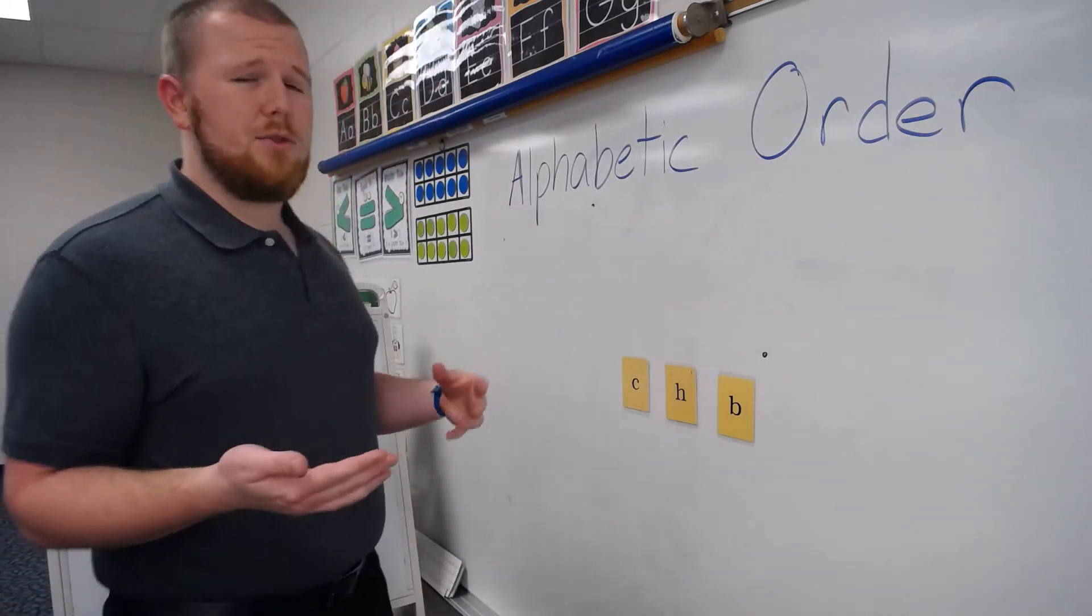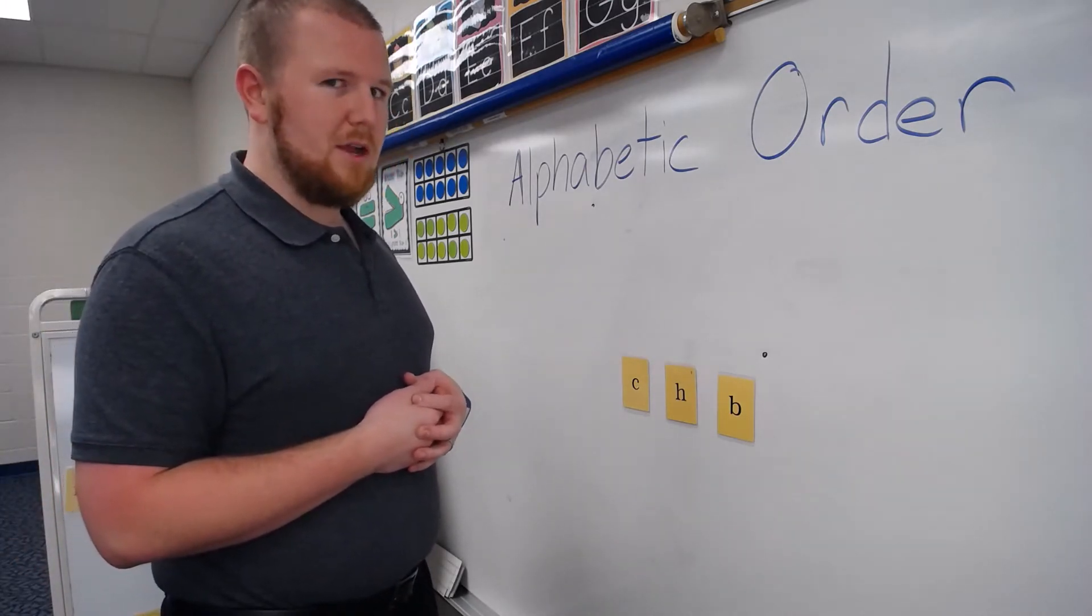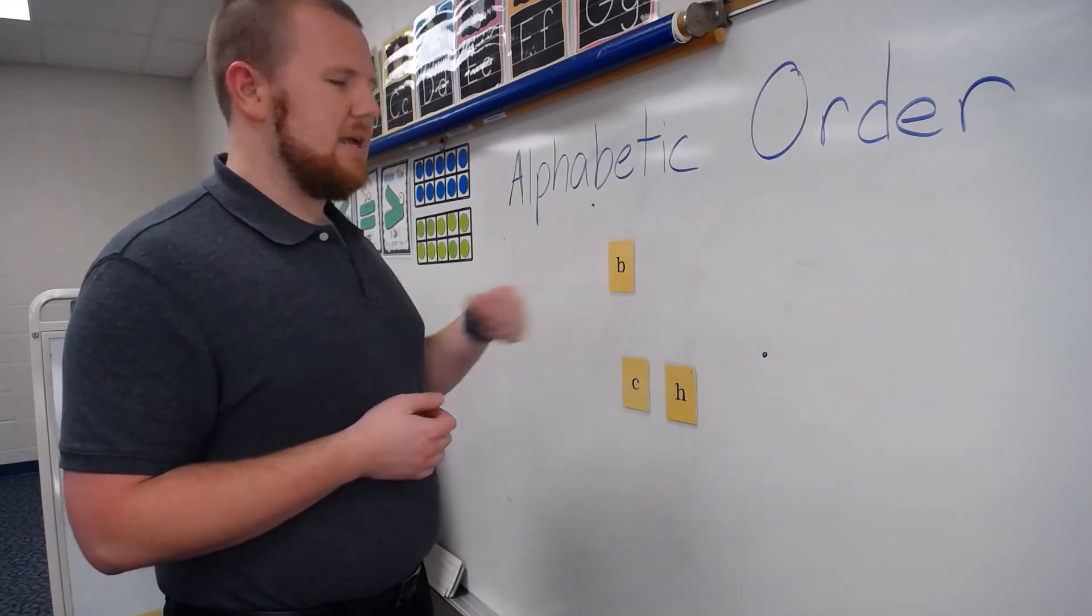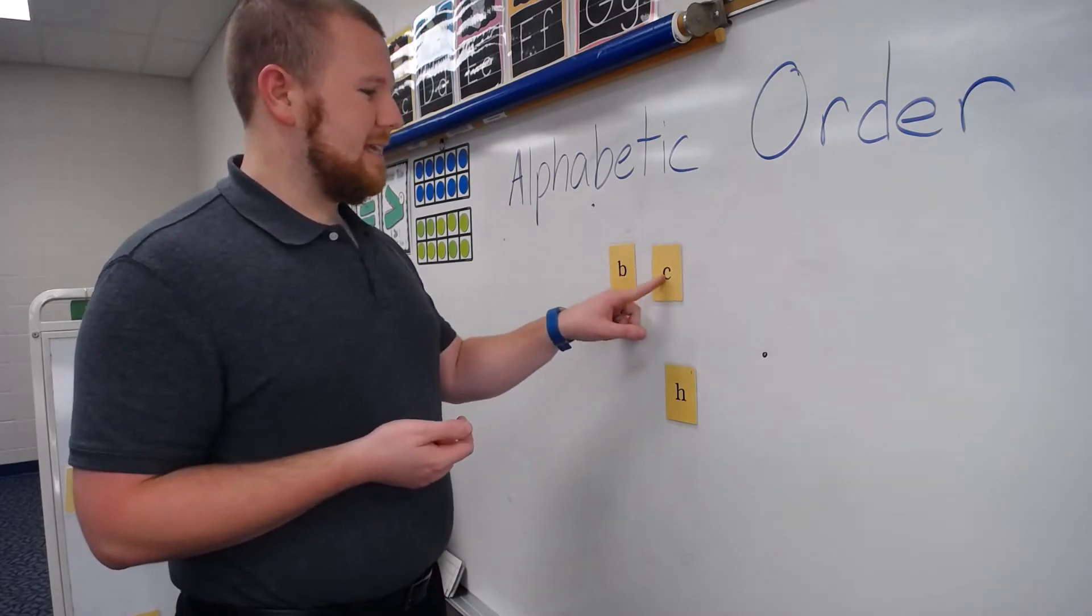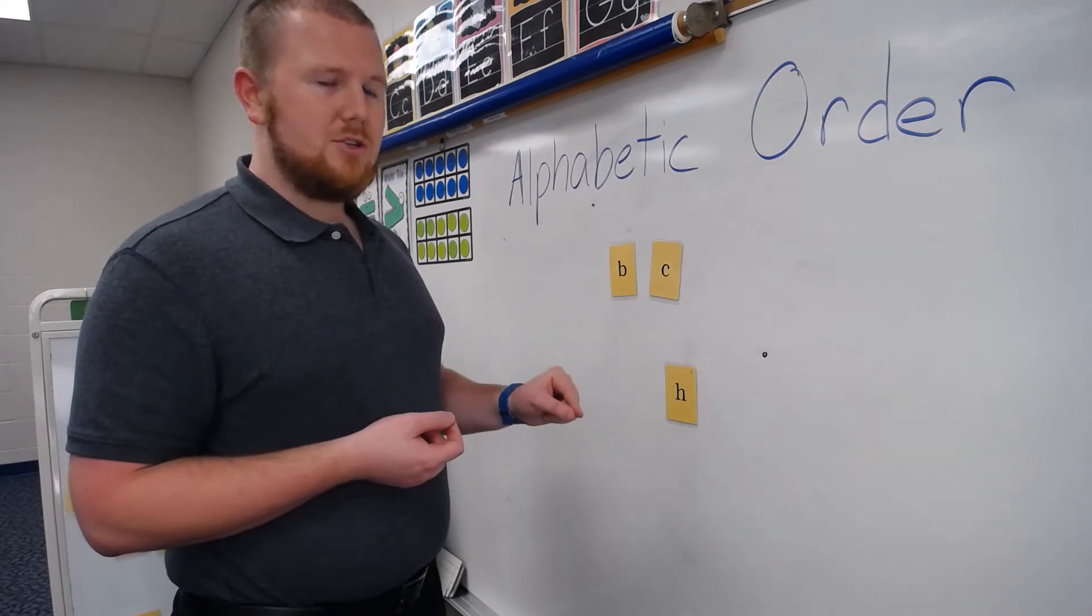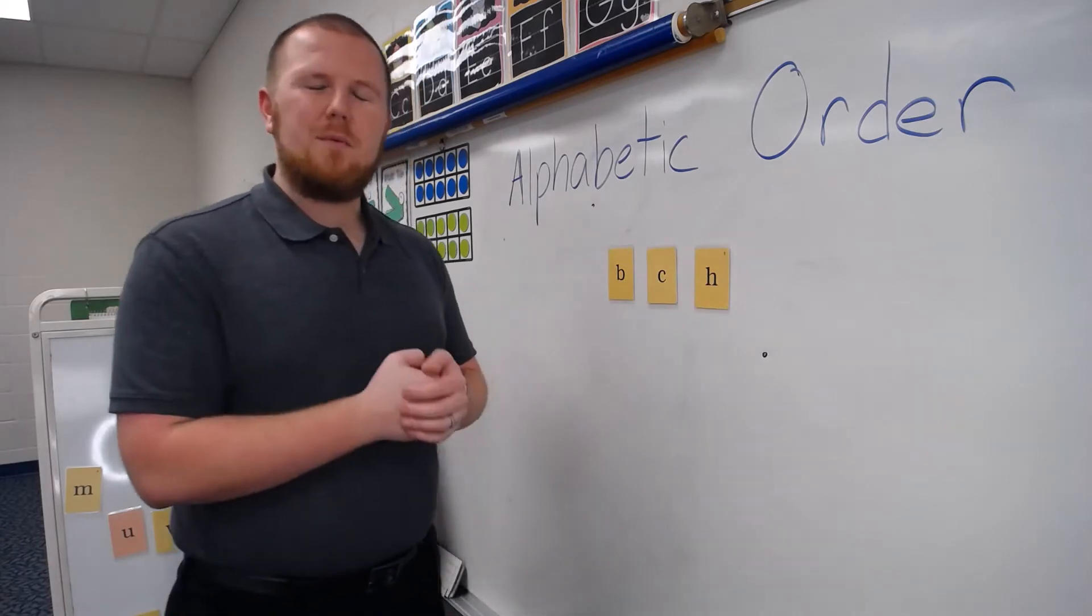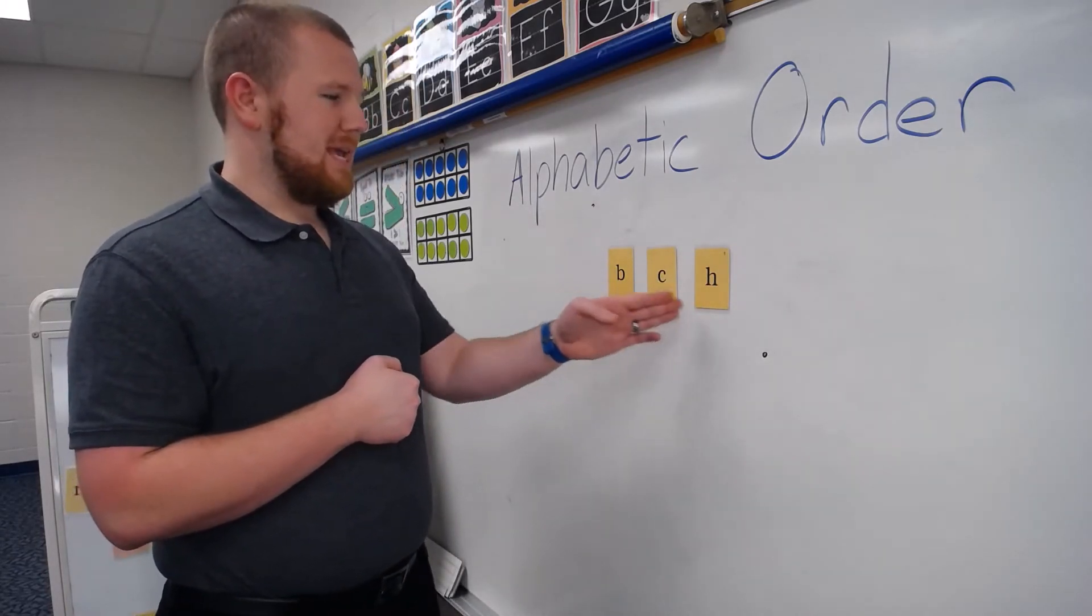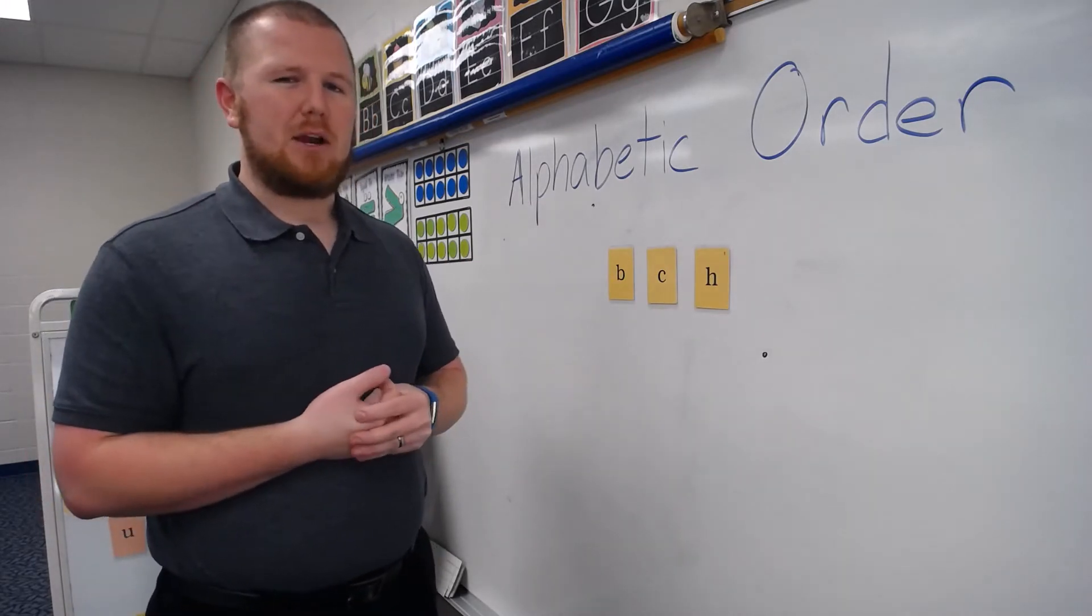So if I go through the alphabet, I can do this. A, B, you found B already? Okay, so we have A, B, C, D. You found C? There we go. A, B, C, D, E, F, G, H. That's our last letter. So this would be putting the letters in alphabetic order. B comes first, C comes in between B and H, and then H comes after B and C. That's helping us put things in alphabetical order.